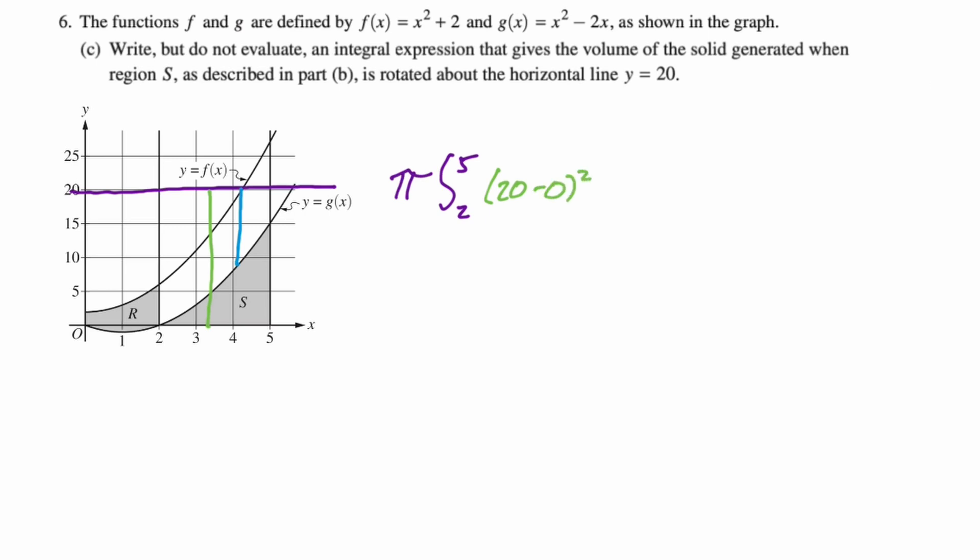So 20 - 0, we're doing top takeaway bottom to find that. So the top curve is 20, the bottom is zero. So (20 - 0)² minus the little radius squared. The little radius is going to be 20 - g(x), so the quantity (20 - g(x))² and then dx. And that's the entire problem.